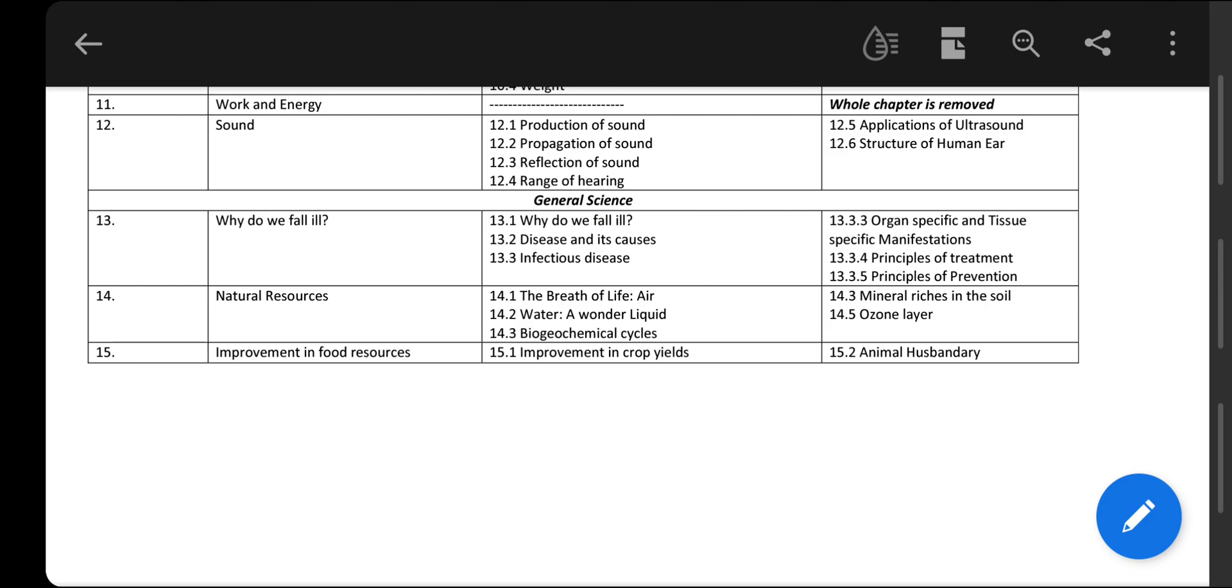The four cycles are water cycle, nitrogen, oxygen, and carbon cycle. The topics excluded are only small topics: mineral riches in the soil and ozone layer.